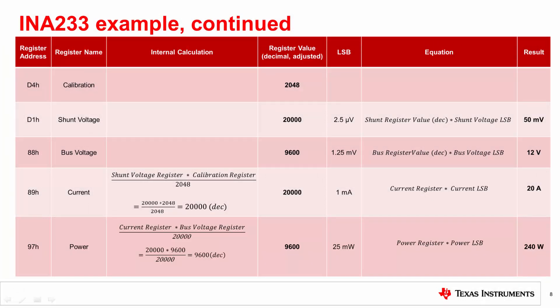Since all values match our expectations, we conclude that we have successfully programmed the INA233 using our simple two-step process. Other TI power monitors can be programmed in a similar fashion. In this example, we multiply the adjusted register values with their corresponding LSBs to get real-world readings of shunt voltage, bus voltage, current, and power. This would be equivalent when using the telemetry data conversion equation if provided in the datasheet.